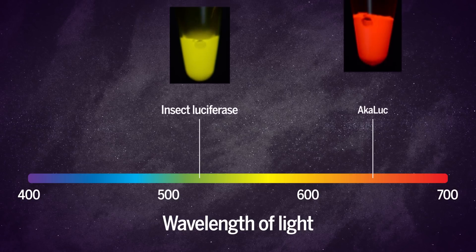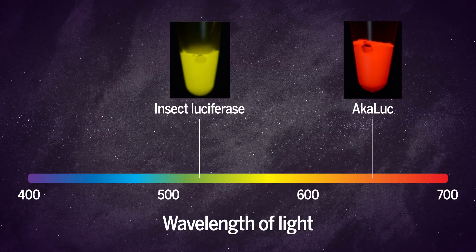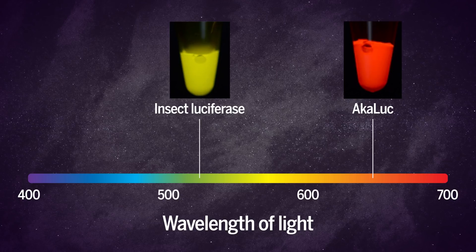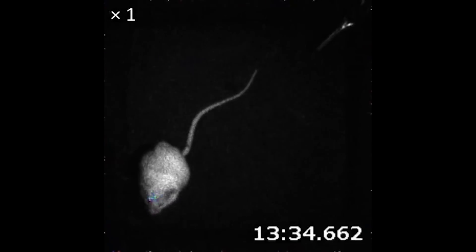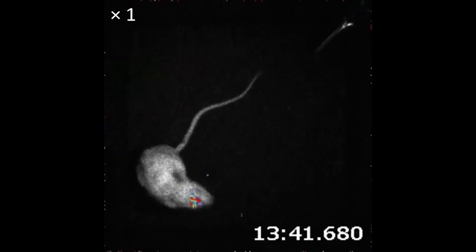The brighter glow was due in part to the fact that the substrate was engineered to emit light in a different part of the spectrum. Redder light passes more easily through tissue. And the evolved enzyme was able to process the substrate faster, meaning more glowing reactions in less time.